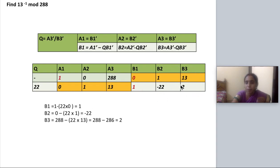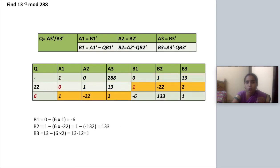Then B3 value, A3 value minus Q into old B3. So that is 288 minus 22 into 13. That is 288 minus 286 that is 2. So the second step is over.